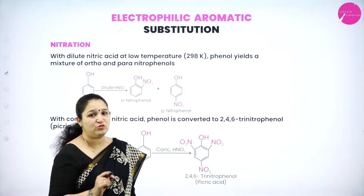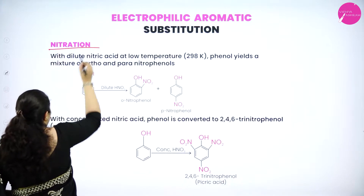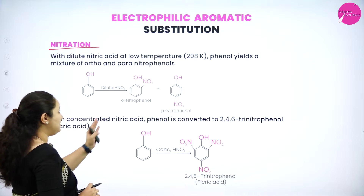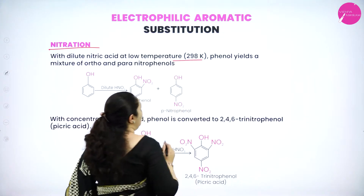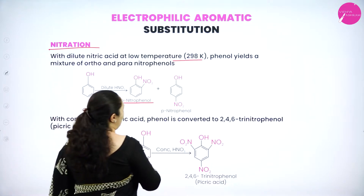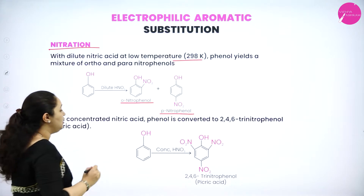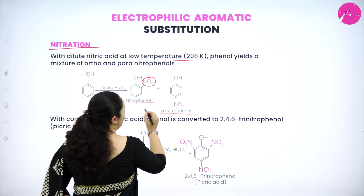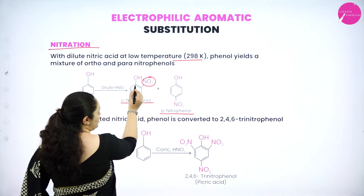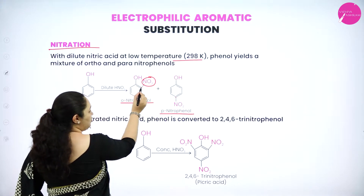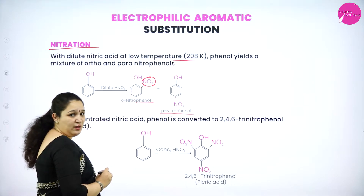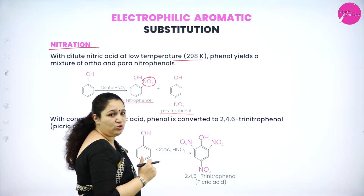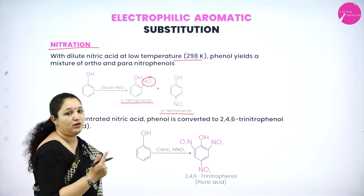The first reaction of electrophilic substitution is nitration. Phenol with dilute nitric acid at a low temperature, that is 298 Kelvin, will yield ortho nitrophenol or para nitrophenol — that is, the NO2 group is substituted in the ortho position or in the para position. We have two ortho positions and the opposite position is called the para position.